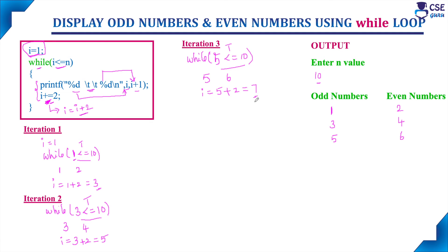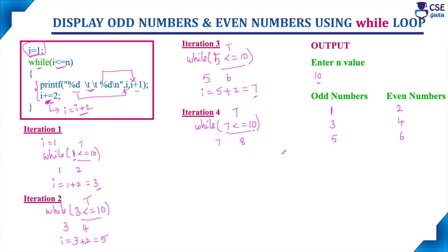With i value 7, consider the next iteration. Check the condition: i is 7, is 7 less than or equal to n value 10? Condition is true. It will allow the body of the loop to execute once. It will print i value 7 and i plus 1 value 8 — output displays 7 and 8, where 7 is the odd number and 8 is the even number. At the end of this 4th iteration, update i: i equals 7 plus 2, so i becomes 9.